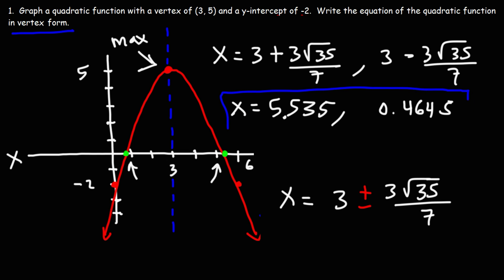Now looking at the answers, or looking at the graph rather, these answers do make sense. The first answer, we could see that it's between 0 and 1. We have an x-intercept there. Now keep in mind, my graph is not perfect, so it's a rough sketch. We can clearly see that's going to correspond to this answer, 0.464. The second point where the graph touches the x-axis is between 5 and 6, which makes sense for this answer, 5.5. So those are the x-intercepts for this graph. That's how you could find it. You simply need to set y equal to 0 and solve for x.